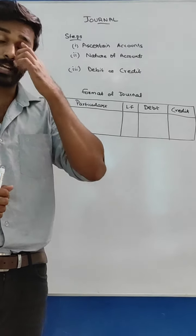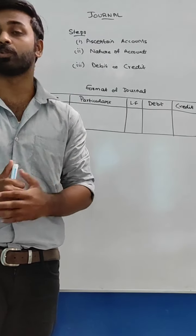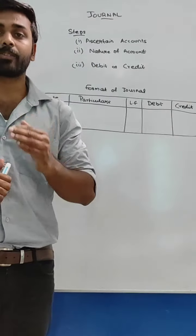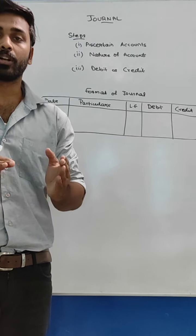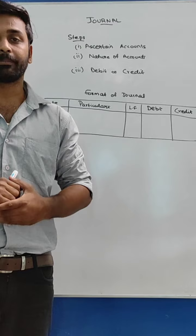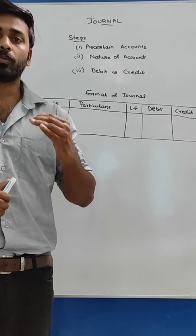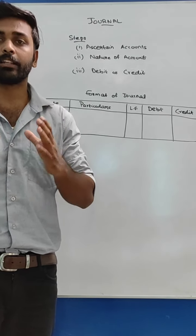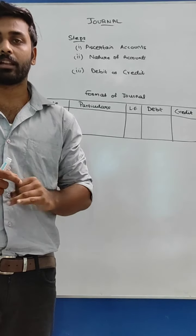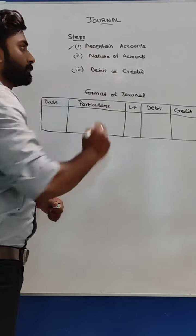Now we will discuss the steps of journalizing. These steps we have already discussed while discussing the rules of debit and credit. The first step is to ascertain the accounts involved in the transaction — that means we have to identify which accounts are involved. Suppose Peter started the business with cash 1 lakh; Peter is the owner. In this transaction, the accounts involved are cash 1 lakh and capital 1 lakh.